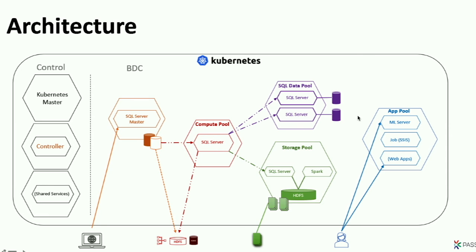StoragePool is our data lake — HDFS with Spark and SQL Server — where we store relational or non-relational data in files and create external tables. In the ApplicationPool we can install web applications that use our cluster data. It looks like a silver bullet, but we still have to think about use cases.